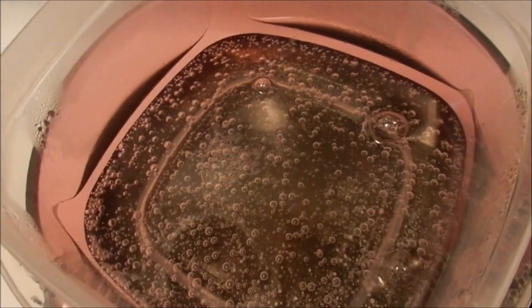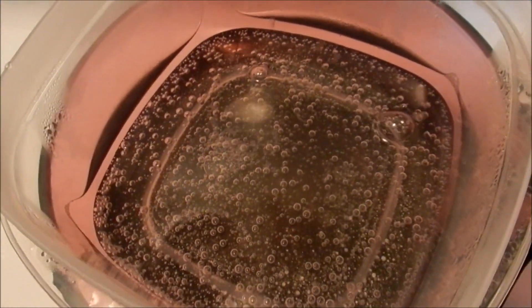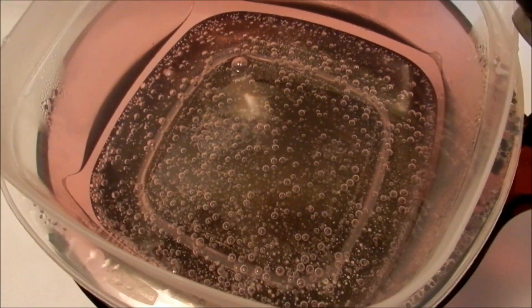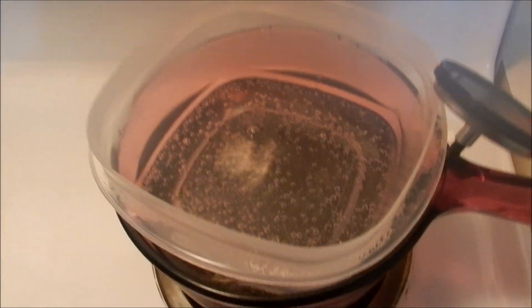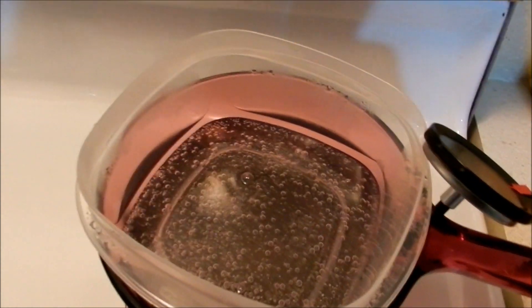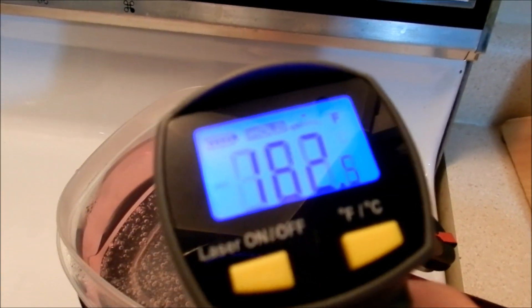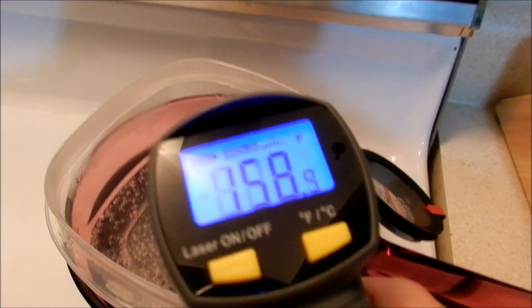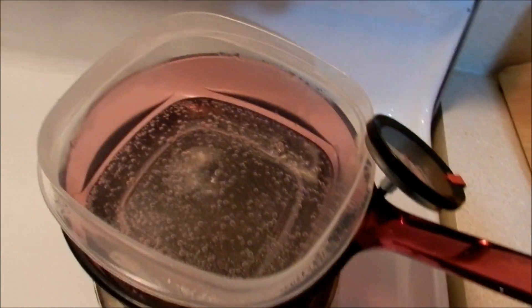And another way to know when your multi-etch is to the right temperature is by looking at the bubbles. Once it starts bubbling, it's about 160 degrees. So there's a good way to tell. Double check. Use your thermometer. 160.